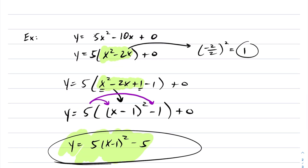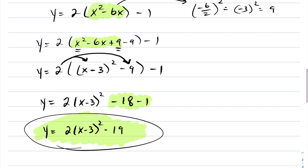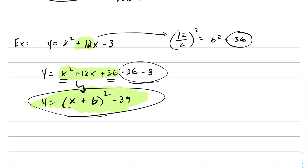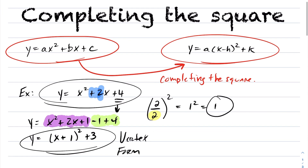That concludes our lesson on completing the square. Completing the square allows us to go from standard form to vertex form. Study these examples — they cover the ideas behind completing the square and the techniques necessary to go from standard form to vertex form. Thank you.